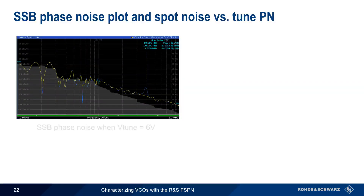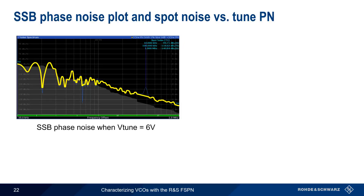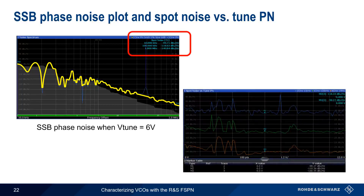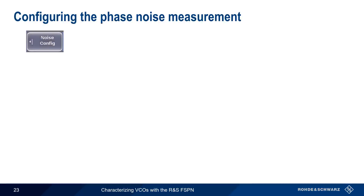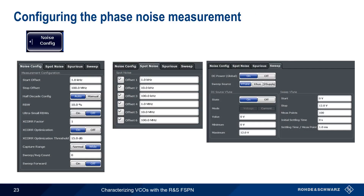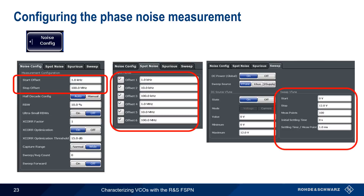If we fix V-tune at 6 volts and make a standard phase noise measurement, the results show both the single-sideband phase noise graph and the spot noise at our user-defined offsets. We can then make a spot noise versus tune phase noise measurement using those same offsets, and placing markers at 6 volts on all three traces should show approximately the same spot noise values. A number of parameters must be configured under Noise Config, including start and stop offsets and the spot noise offsets. Please see the separate presentation on measuring phase noise with the FSPN for more information.